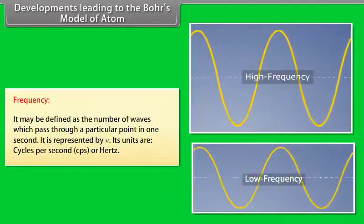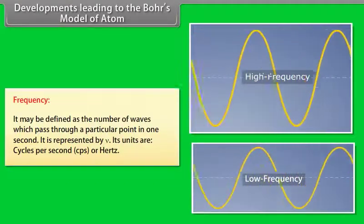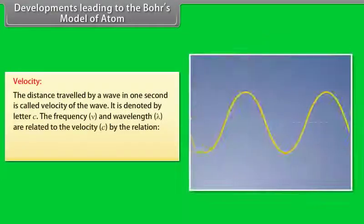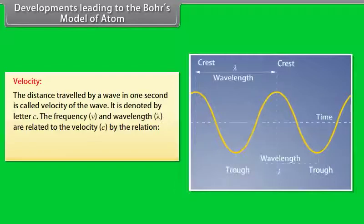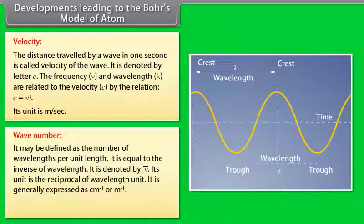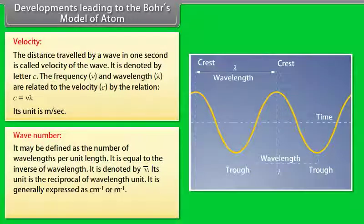Frequency (ν) is the number of waves passing through a point per second, measured in cycles per second or hertz. Velocity (c) is the distance travelled by a wave per second; frequency and wavelength are related by c = ν × λ, with units of meters per second. Wave number (ν̄) is the number of wavelengths per unit length, equal to the inverse of wavelength: ν̄ = 1/λ, expressed as 1/cm or 1/m.